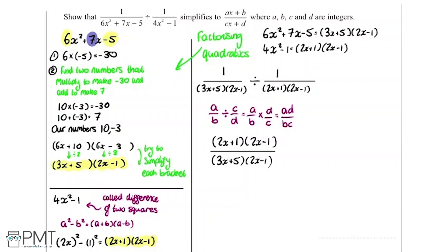And what we can now see, we've got a common factor on the top and the bottom of the fraction. So we can cancel it down. So we can cancel this bracket and this bracket like this. So we're going to be left with 2x plus 1 all over 3x plus 5.